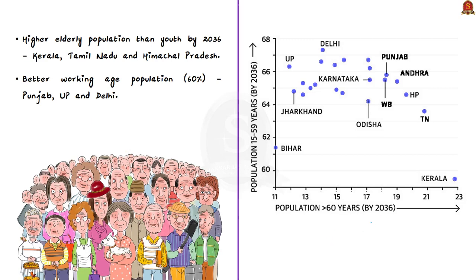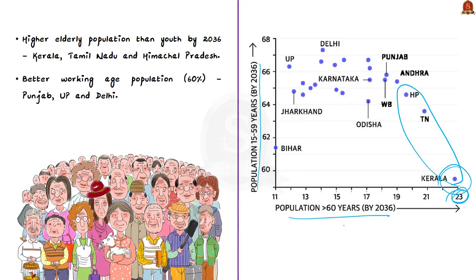The second graph provides state-wise data projected for 2036. States like Kerala, Tamil Nadu, and Himachal Pradesh are projected to see higher elderly population than youth — Kerala is projected to have a 23% elderly population by 2036. In contrast, states like Punjab, Uttar Pradesh, and Delhi are projected to have lower 60+ populations and over 60% working age population, giving them better demographic dividends.